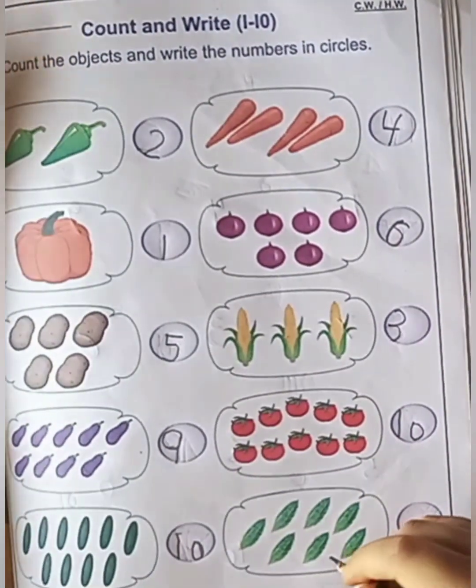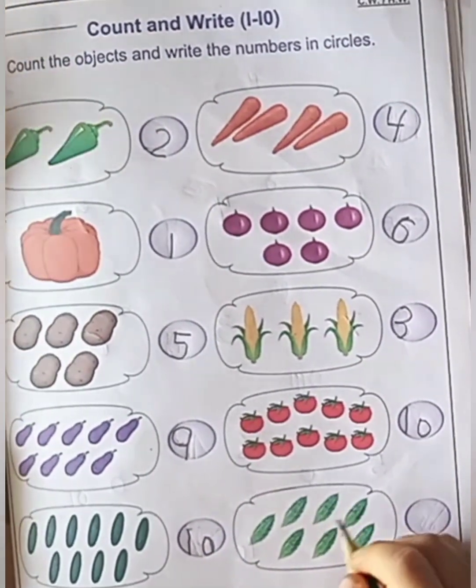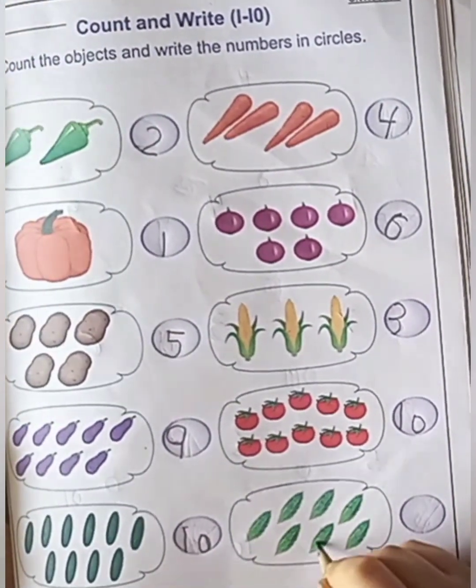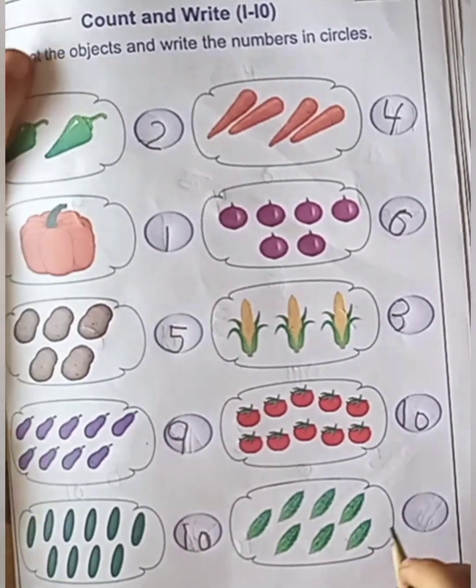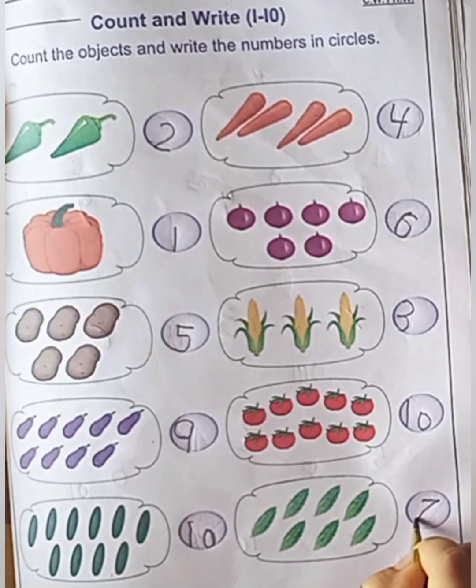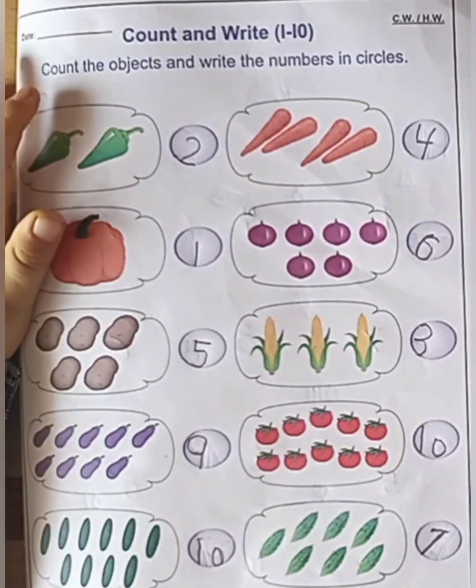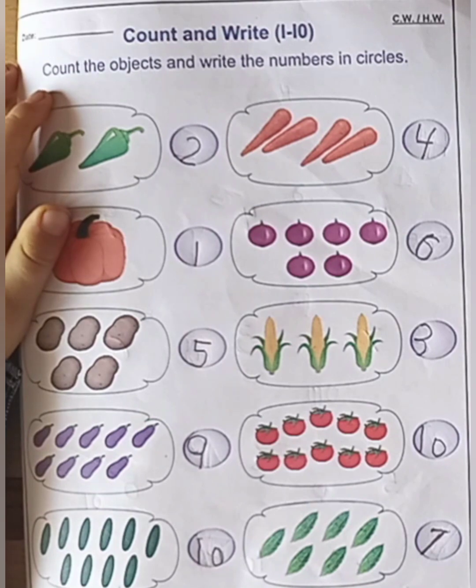Next. Bitter guard. One, two, three, four, five, six, seven. Very good. How many bitter guards? Seven bitter guards are there. Good, Araf. Very good. Good job.